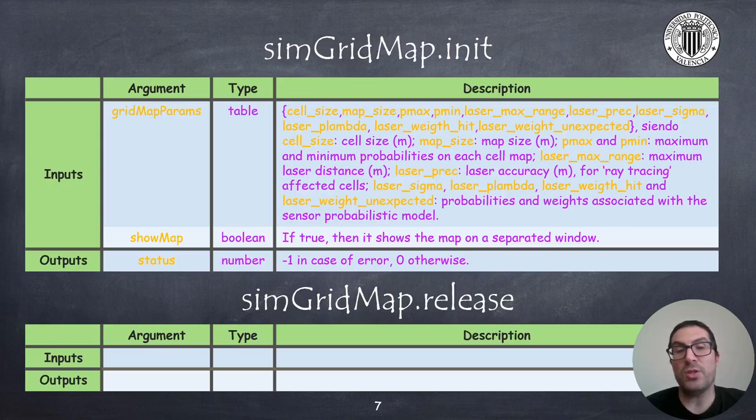On the one hand, you need to provide the parameters that define the size and the resolution of the map. You also need to provide parameters that define the minimum and maximum probabilities for each cell in the map. And also you need to provide parameters that determine the maximum distance that you will use for your laser sensor, as well as its accuracy and precision, because we use that for ray tracing to know which are the affected list of cells for a specific ray.